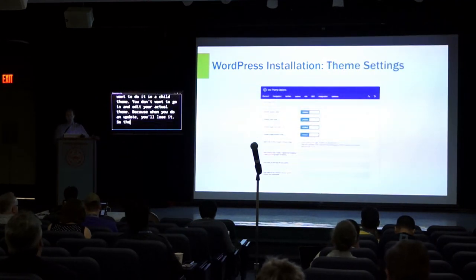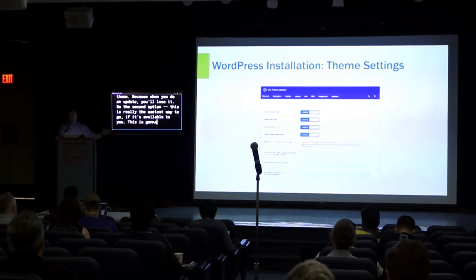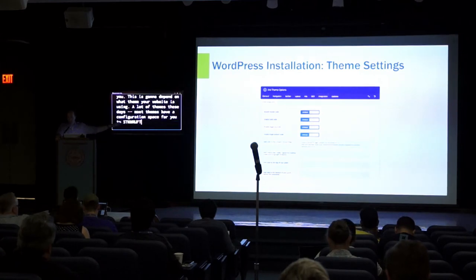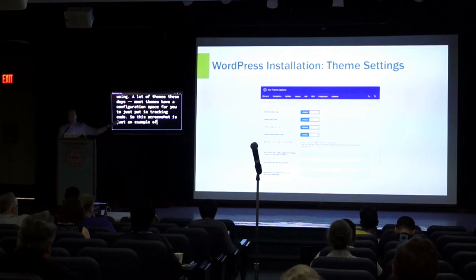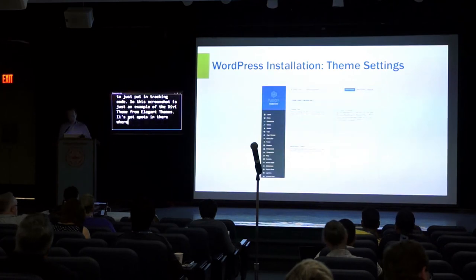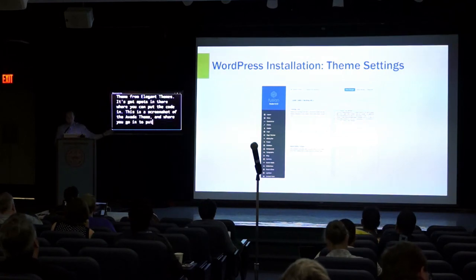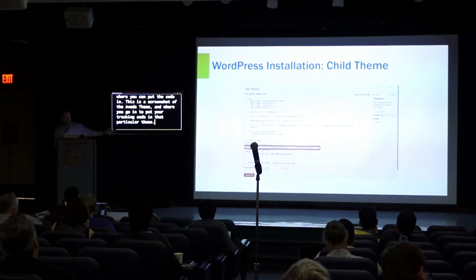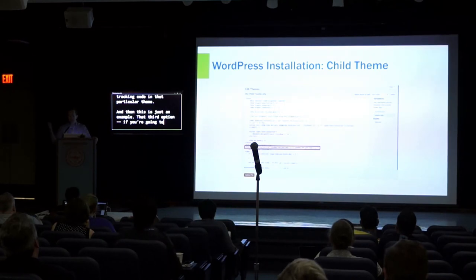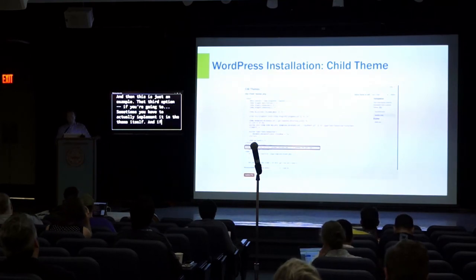The second option is really the easiest way to go if it's available to you. This is going to depend on what theme your website is using. A lot of themes these days have a configuration space for you to just put in tracking code. This screenshot is just an example of the Divi theme from Elegant Themes — it's got spots in there where you can put the code in. This is also a screenshot of the Avada theme and where you go to put your tracking code. The third option is when you have to actually implement it in the theme itself — and if you do that, you want to use a child theme.